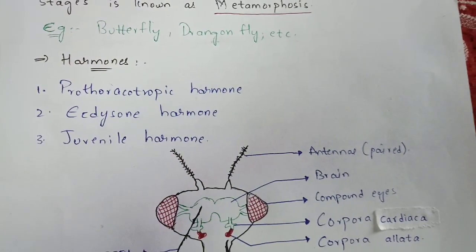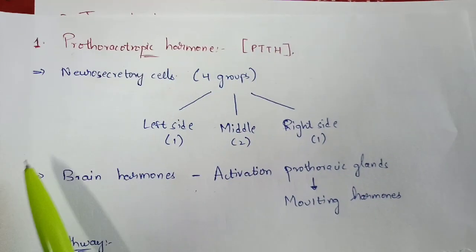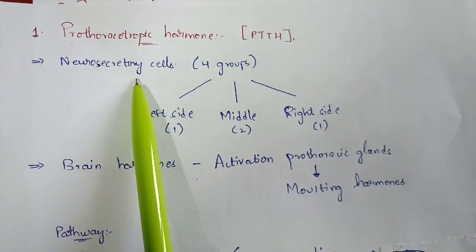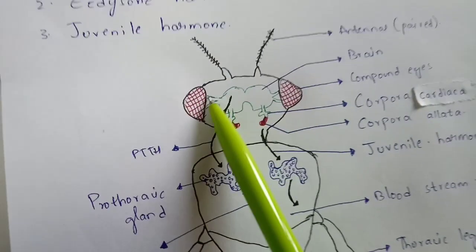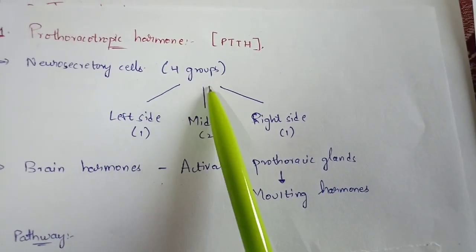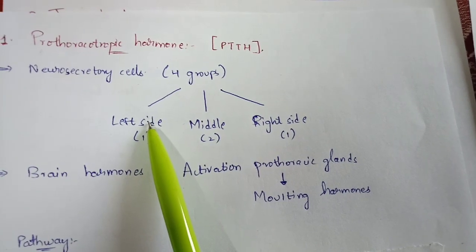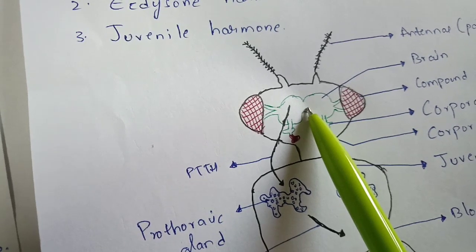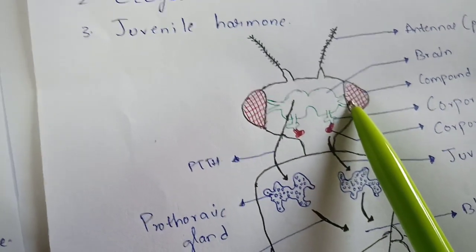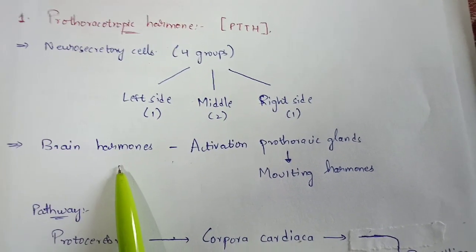Now let us discuss about prothoracotropic hormone, shortly abbreviated as PTTH. It is a type of hormone secreted from the neurosecretory cells, and these neurosecretory cells are present in the brain region. There are four groups of neurosecretory cells: two groups are present in the middle region of the brain, one group at the left side, and one group at the right side of the brain.